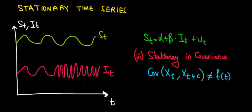In this video let's have a look at the last assumption of having a stationary time series, and that is to have a stationary covariance. This is the mathematical way to show the covariance of a variable. The covariance between inventory at a certain point in time and the inventory in the next period must not change across time.